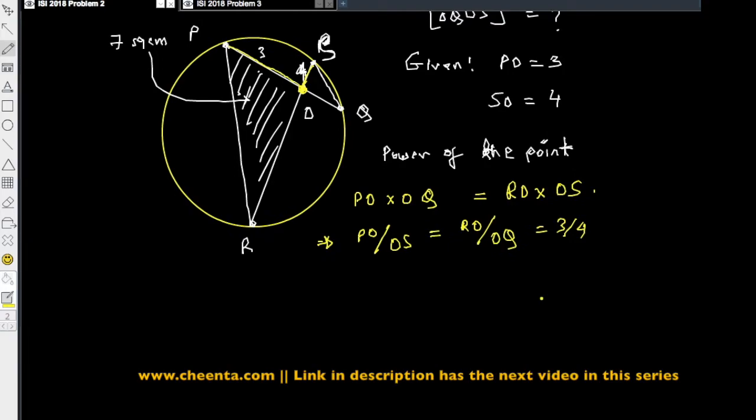So, area of POR divided by area of QOS. We will find the ratio of these two areas.